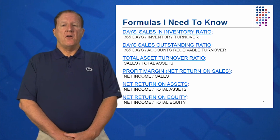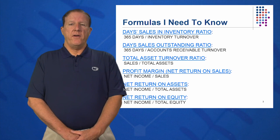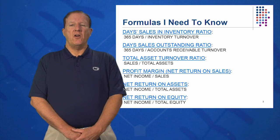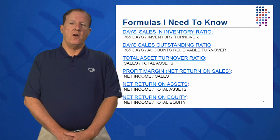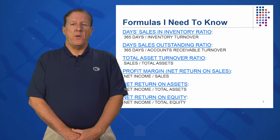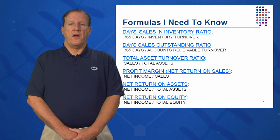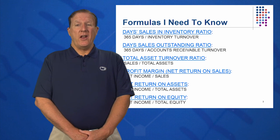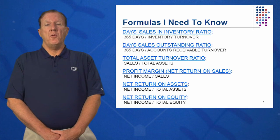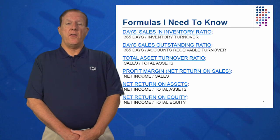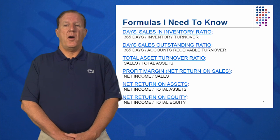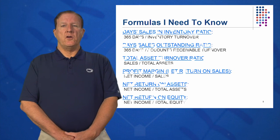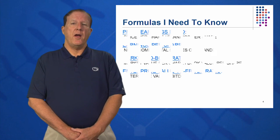The next category is profitability ratios — very, very important, with three key ones: net return on sales, net return on assets, and net return on equity. If you look at those ratios, you can see that it's net return on anything, basically — net income in the numerator and anything in the denominator. So there's another mnemonic to help you know these ratios versus memorize them.